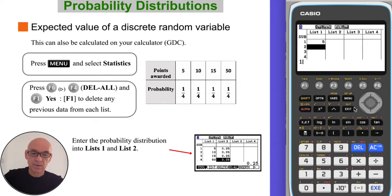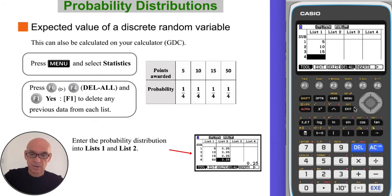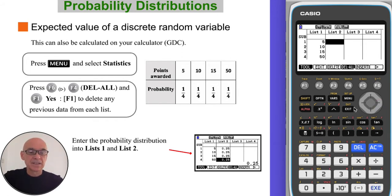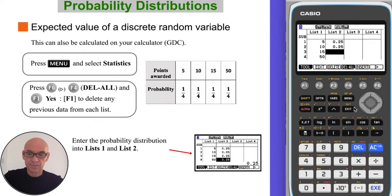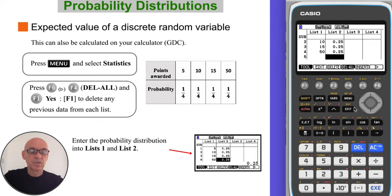Enter 5, 10, 15, and 50. In the second list we can put the probabilities: one quarter, one quarter, one quarter, one quarter, and one quarter. Notice the calculator converts them into decimals.